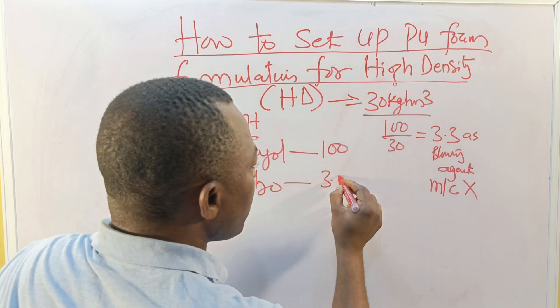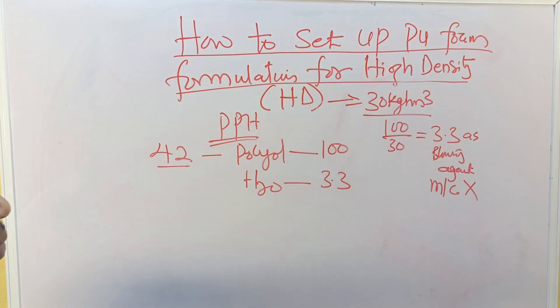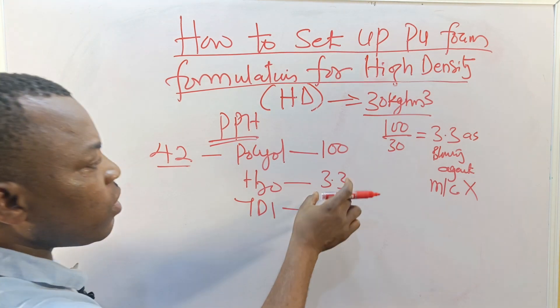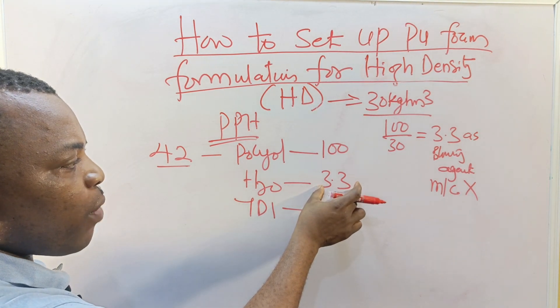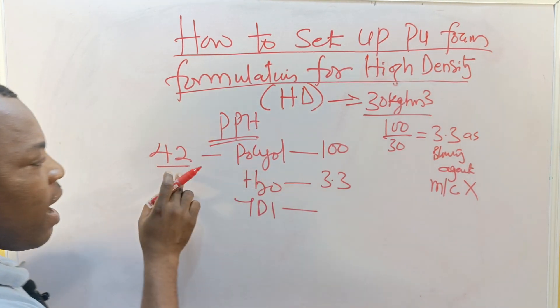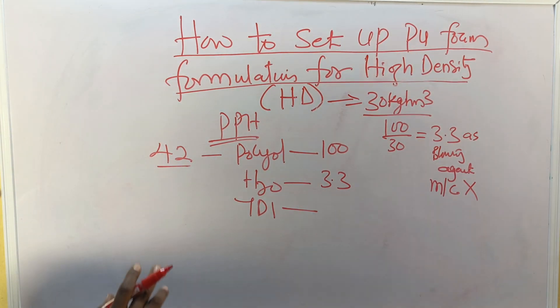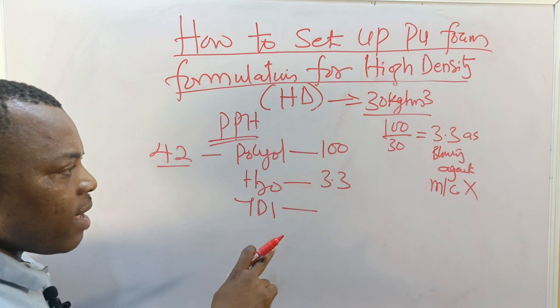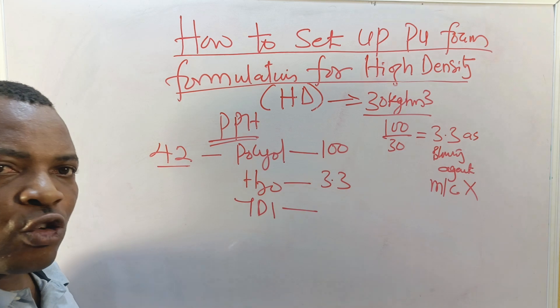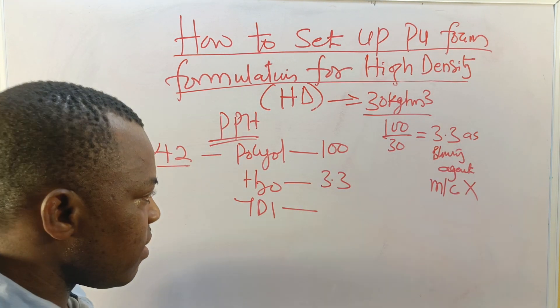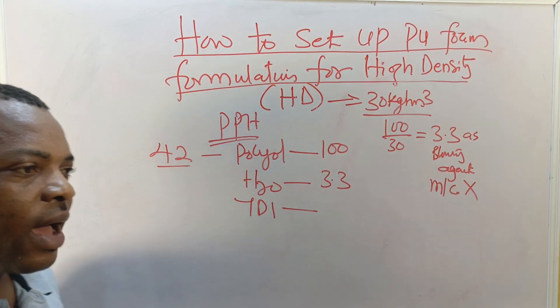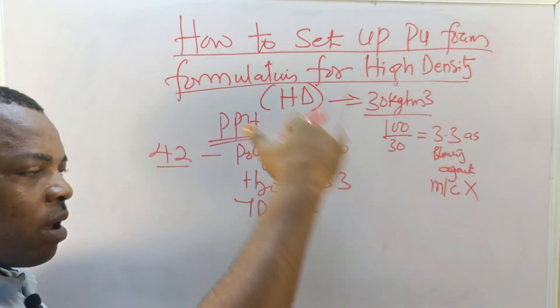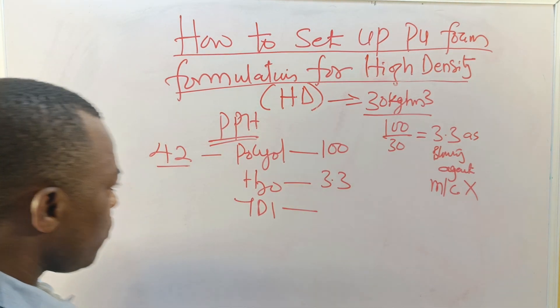This OH group is pre-stated in the raw material safety data sheet from the supplier of this polyol. In this case my water will be 3.3. Now how do I get my TDI? I've gotten my water, 3.3 parts of water, and I have my hydroxyl value. What I need to do now, I just said that the TDI is consumed in two ways.